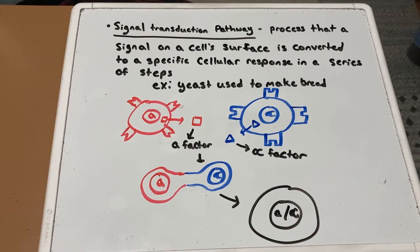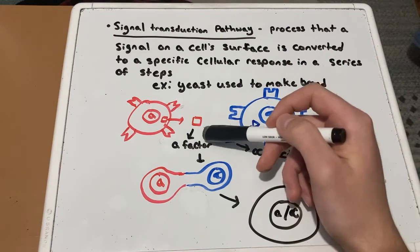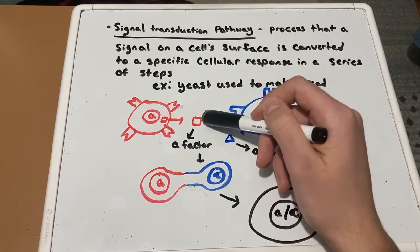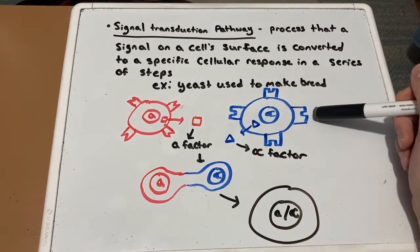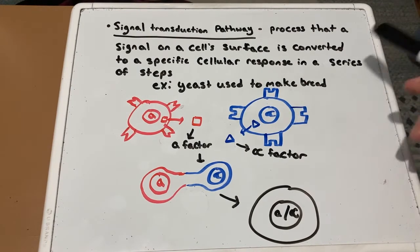A good example of a signal transduction pathway is the yeast used to make bread, wine, and beer. Within this yeast, there are two sexes, an A and an alpha. The cells of type A secrete a signaling molecule called A factor, which will bind to receptors on the alpha cell. The A factor is represented by a red square, and it will bind to the receptors found on the alpha cell, fitting perfectly.